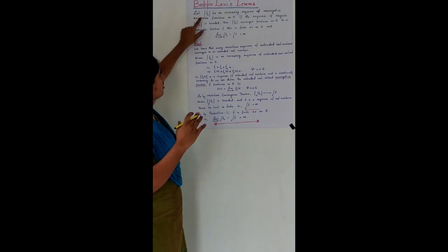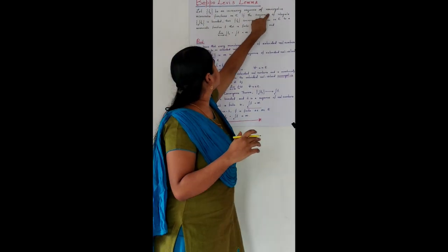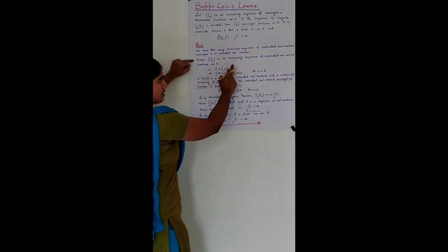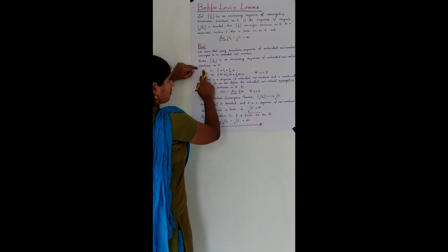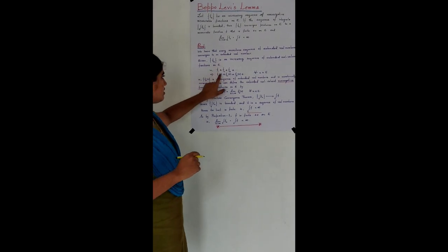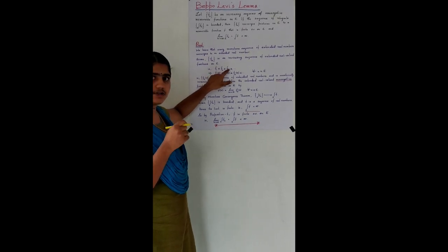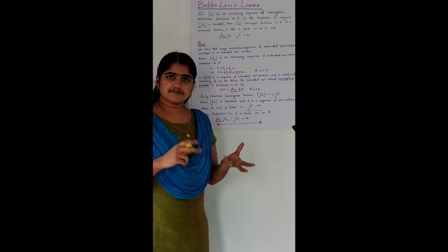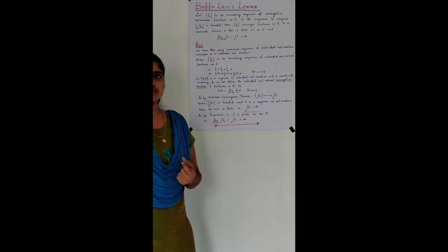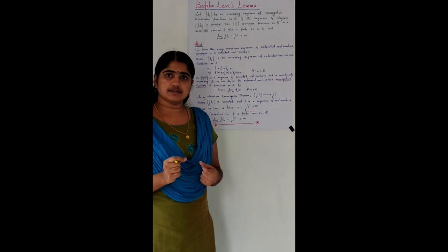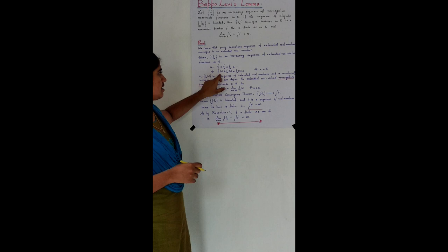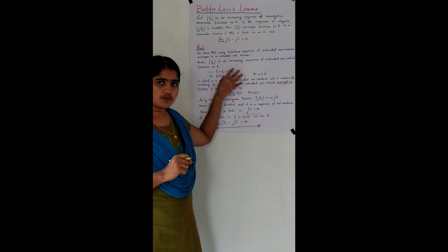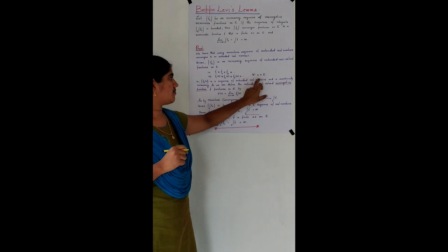We are given a sequence of non-negative measurable functions and that sequence is increasing. So the sequence {Fₙ} satisfies F₁ ≤ F₂ ≤ F₃ ≤ F₄ and so on. F ≤ G means F(x) ≤ G(x) for all x in the domain, so here we get F₁(x) ≤ F₂(x) ≤ F₃(x) ≤ ... for all x in E.